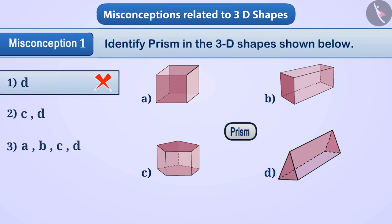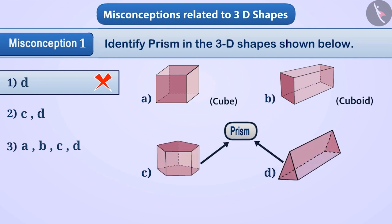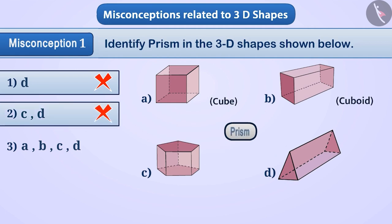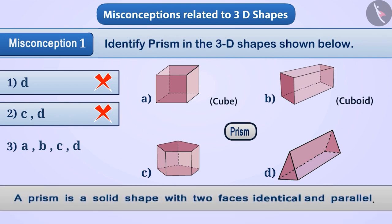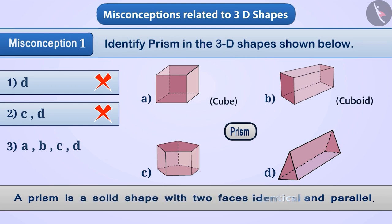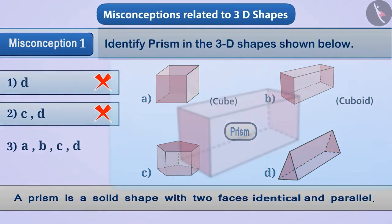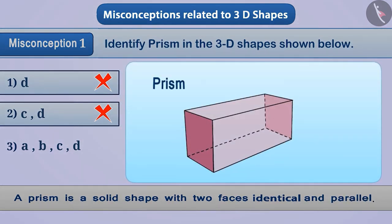Similarly, some children think that cube and cuboid are not prisms, so they consider only shapes C and D as prisms, and option 2 is chosen, which is also incorrect. To identify a prism, it is necessary to understand its definition: a prism is a solid shape with two faces that are identical and parallel. To identify whether a shape is a prism, we check whether its two faces are identical and parallel.